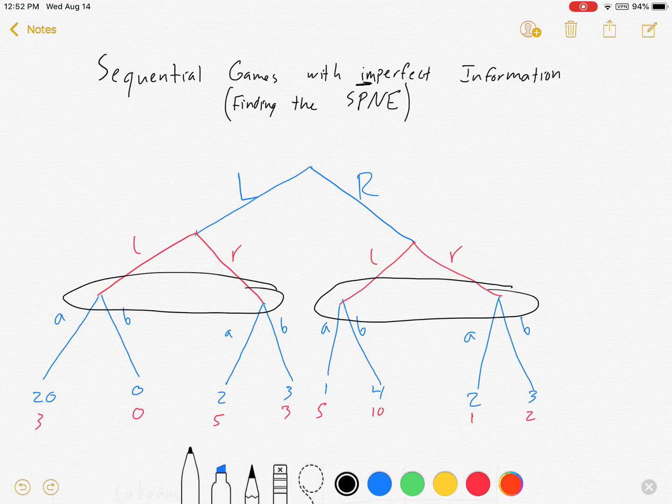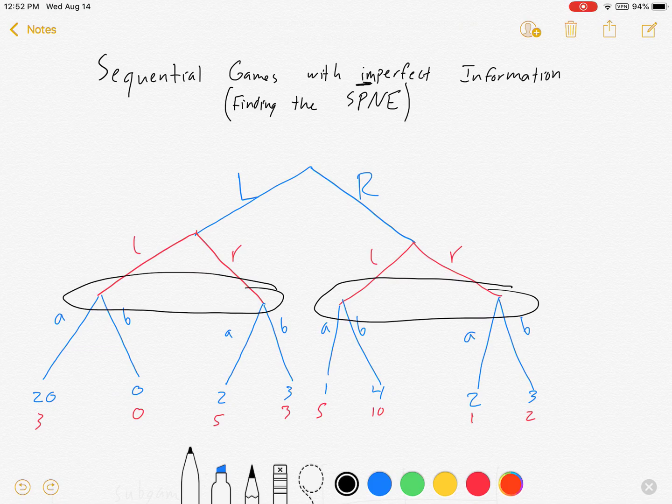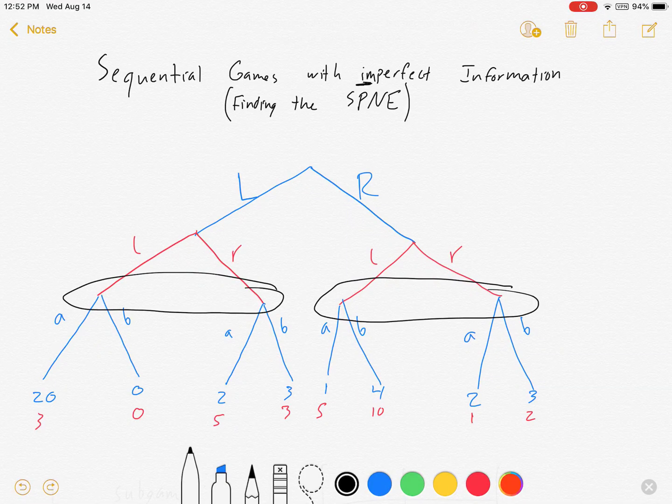It makes it much more like a simultaneous game, because red player also knows that blue will be playing like it's simultaneous, will be playing like there's no information. And so red player will also play as if it's a simultaneous game.